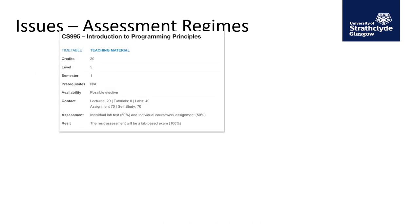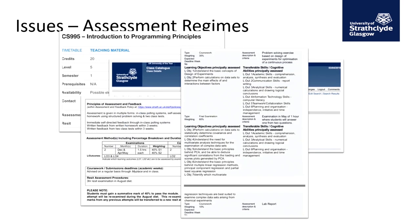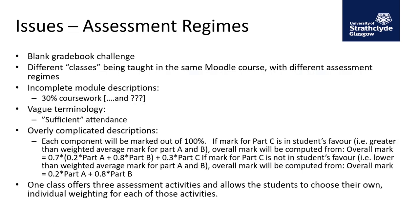On top of that, we have organizational issues. These are some examples of the different forms that our institution uses to describe a module, and there are at least six different varieties of paper form with no consistency in them. So for us as central IT, trying to communicate some of the information in there is quite difficult. At the start of the project, we did a random sample of the module descriptors and went through to identify each of the issues and cherry-pick the ones we really wanted to fix.